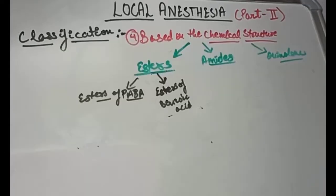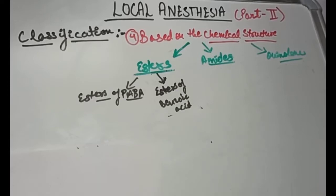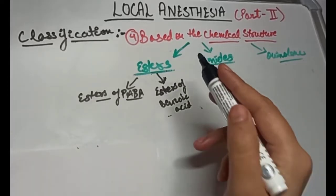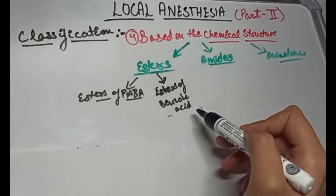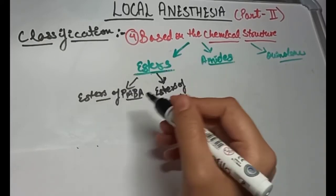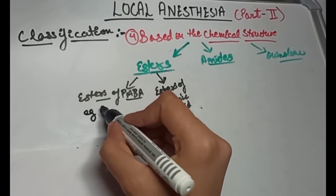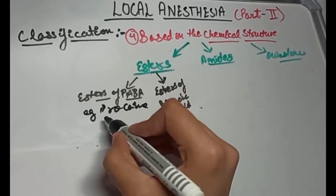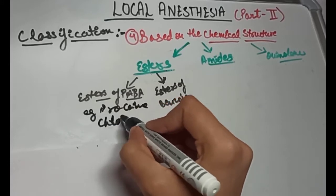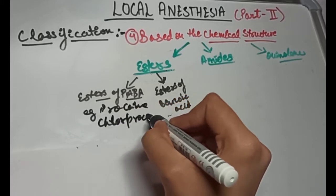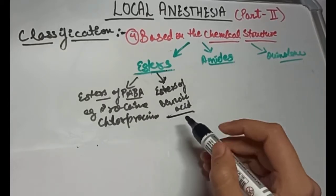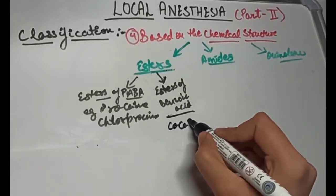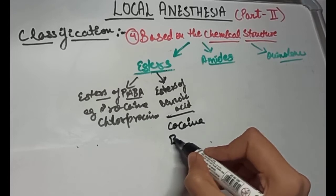Based upon their chemical structure, LA can be classified as esters, amides, and quinolones. Esters can be divided as esters of PABA or esters of benzoic acid. Esters of paraminobenzoic acid examples are procaine and chloroprocaine. Examples of esters of benzoic acid are cocaine and benzocaine.